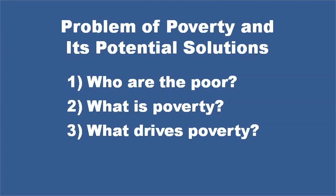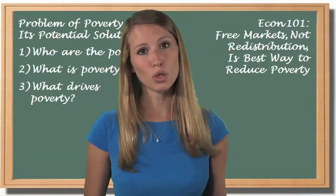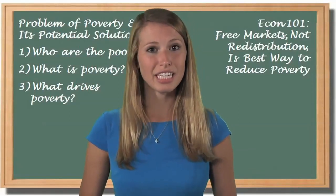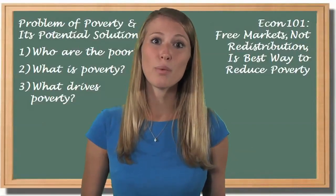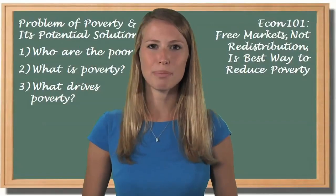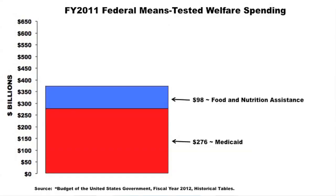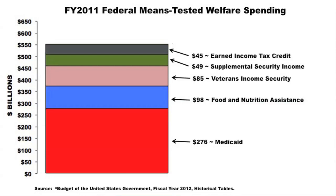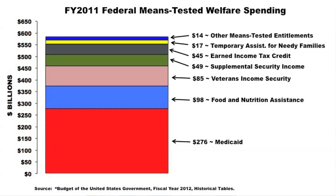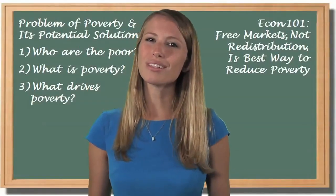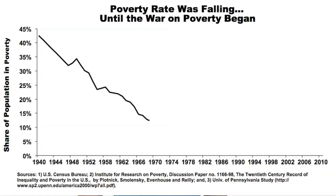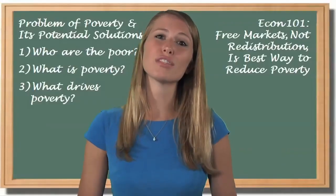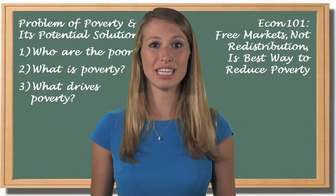Thirdly, what drives poverty? America's poor may have adequate living standards based on historical and cross-country comparisons, but our goal should be much higher than adequacy. And this is why we should be looking at the negative impact of government. Let's focus on what really matters in this debate: the huge array of means-tested programs and the record amounts of money being redistributed for the supposed benefit of lower-income Americans. It certainly should be apparent that politicians have been throwing money at the problem. But is it working? Well, let's consider the poverty rate, which was falling steadily in the United States in the 1950s and 60s. But then the war on poverty began, and poverty rates stagnated. Why? The most logical answer is that governments started subsidizing poverty. The safety net became a hammock.